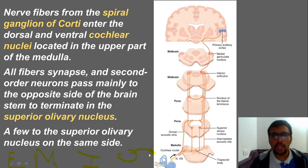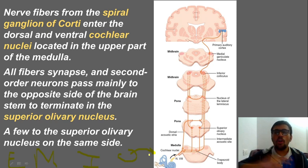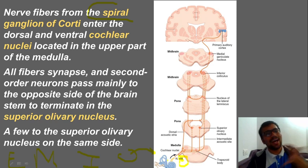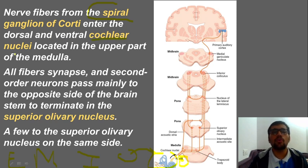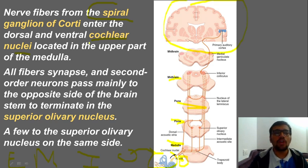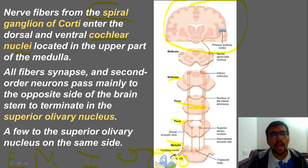From the organ of Corti, the cochlear nerve supplies and forms the spiral ganglion of Corti — that part is already covered, and it is also called cranial nerve eight. Now, nerve fibers from the spiral ganglion of Corti enter the dorsal and ventral cochlear nuclei, located at the upper part of the medulla, as you can see in this diagram.